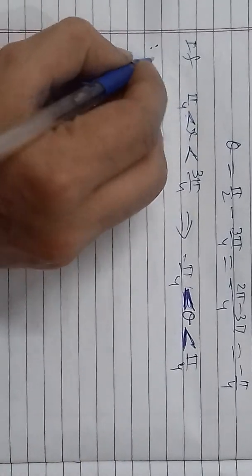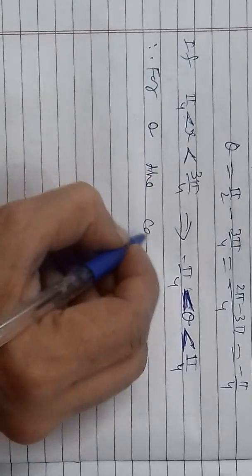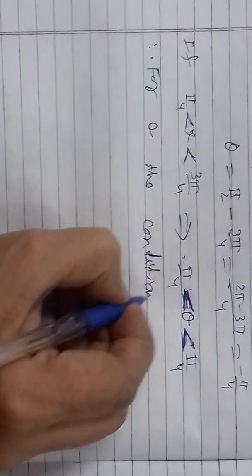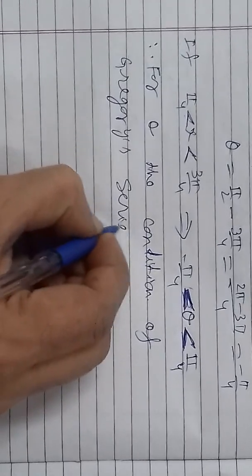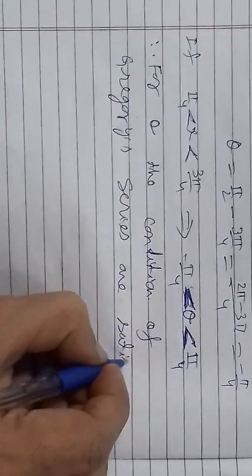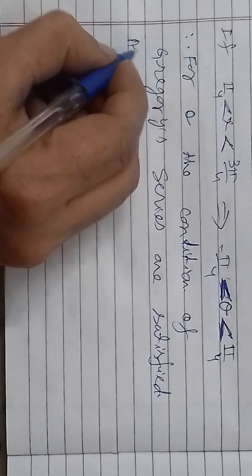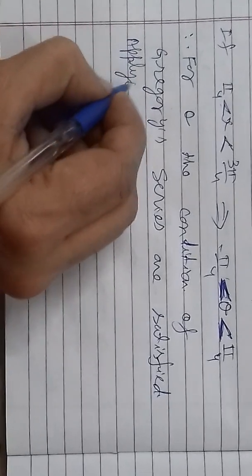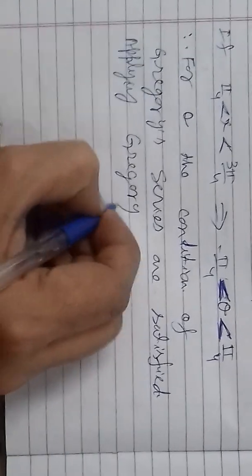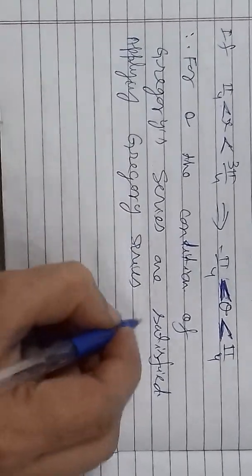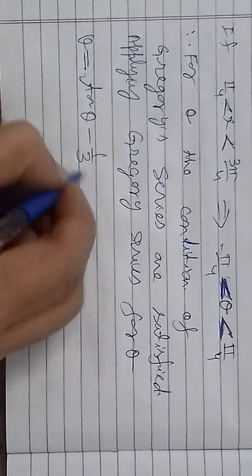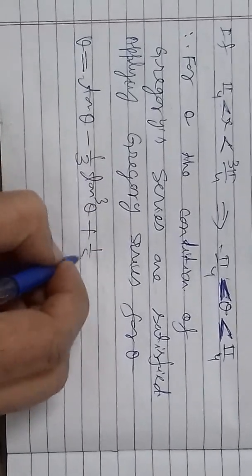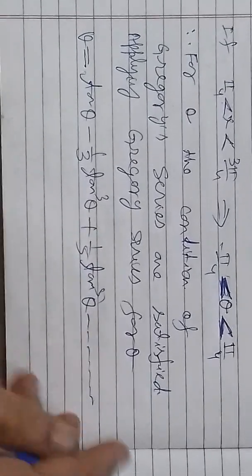Therefore, for theta the condition of Gregory series is satisfied. Applying Gregory series for theta: left hand side is theta, right hand side is tan θ minus 1/3 tan³θ plus 1/5 tan⁵θ minus and so on to infinity.